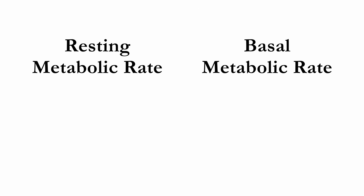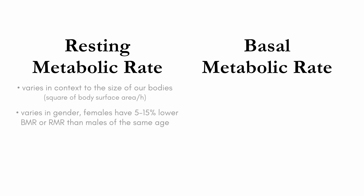Resting metabolic rate varies in context to the size of our bodies — specifically in relation to the square of body surface area per hour. As mentioned before, RMR also varies by gender, so females usually have about 5 to 15% lower BMR or RMR than males of the same age. This is due to the naturally less fat-free mass on women's bodies.